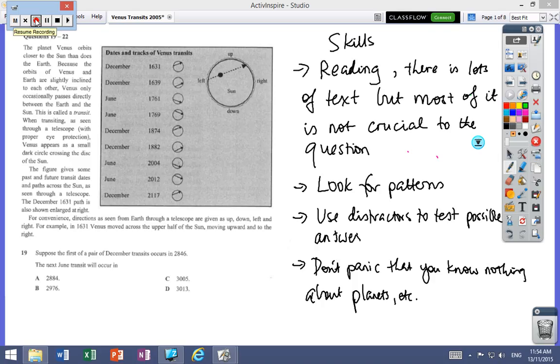In this particular question we've got some information—the first of a pair of December transits. If you look, that might be the first of a pair, and what this question is asking us to do is find the next June by looking at the pattern. Let's have a look at my solution.